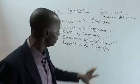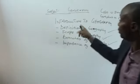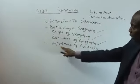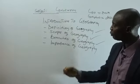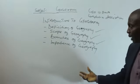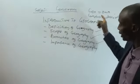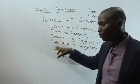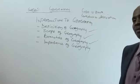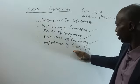Number one: from the definition, we said geography is the description of the earth. So when you study geography, it will give you first-hand knowledge about your environment. Environment is our surrounding — things that surround us. Since geography is the study of the earth, one key importance is that it gives you first-hand information about your environment.